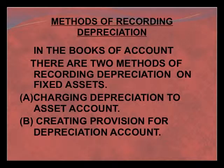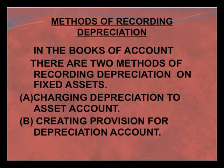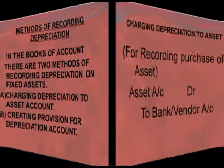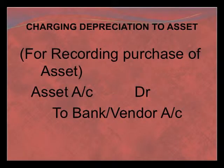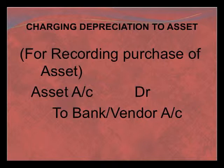When we talk of the method of accounting for depreciation, there are two methods for recording depreciation on fixed assets. The first method is charging the depreciation to the asset account, and the other is creating a provision for depreciation account. For the first method, for recording the purchase of an asset we pass the entry: asset account debit to bank or vendor account — debit to bank if purchased for cash, debit to vendor if purchased on credit.